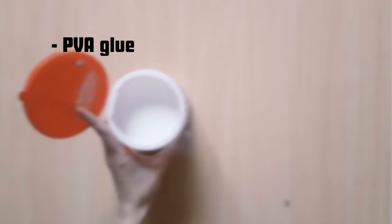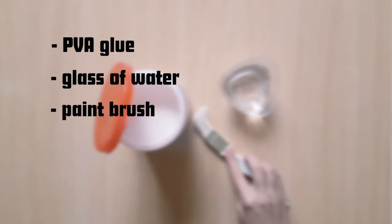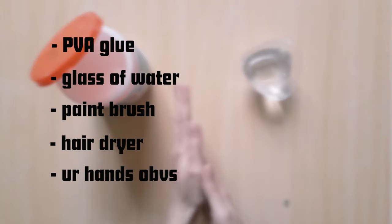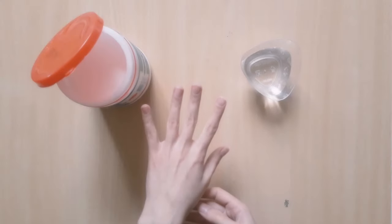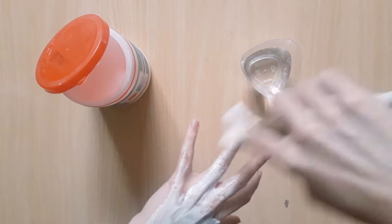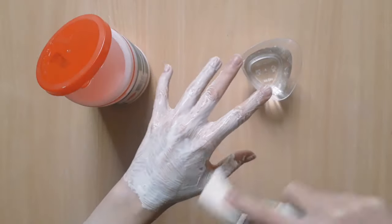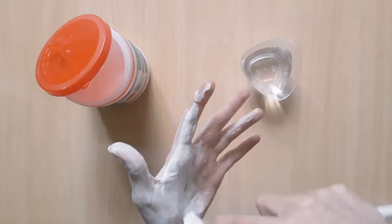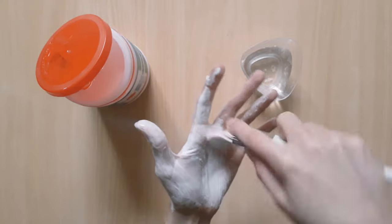So for the first part, you're gonna need PVA glue, a glass of water, a paintbrush, a hairdryer, and your hands, obviously. So basically what we're gonna do is paint our hands completely with glue and do that for a couple of times and then peel it off like a glove. And that is how we're gonna make the hand.